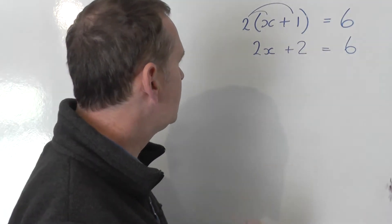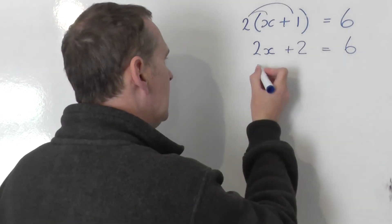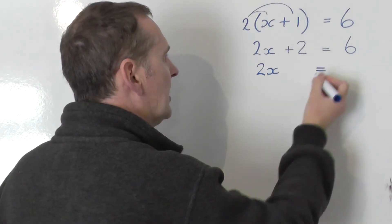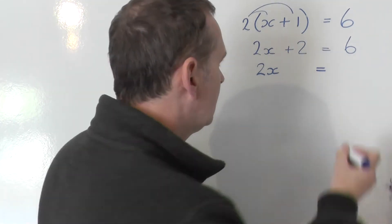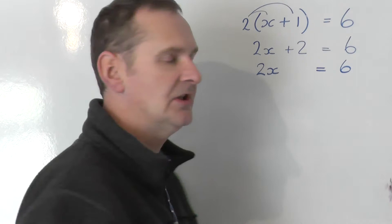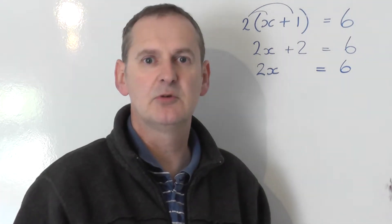On the left I've got 2x, and that means I'm going to leave the 2x on the left, and I'm going to collect the number terms, the 6 and the other 2, to the right-hand side. The 6 is already where I want it, so I'll leave the 6 alone. It doesn't swap sides, it doesn't swap sign.